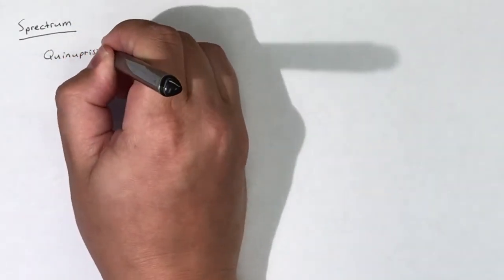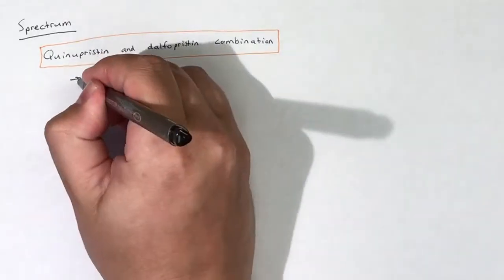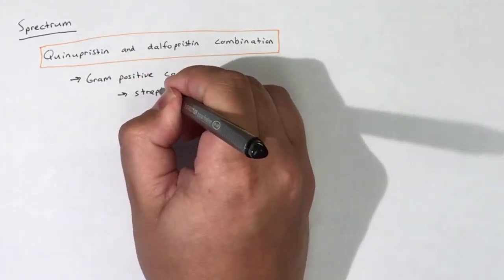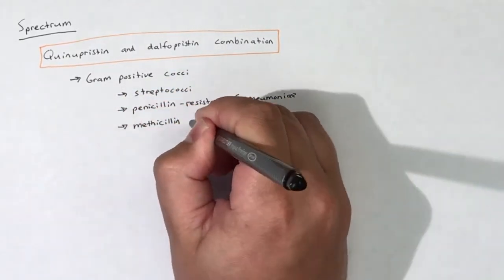The Quinupristin and Dalfopristin combination is active against gram-positive cocci, including resistant Streptococci, penicillin-resistant S. pneumoniae, and methicillin-resistant Staphylococci.